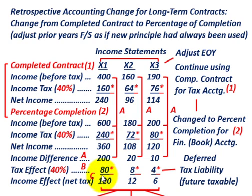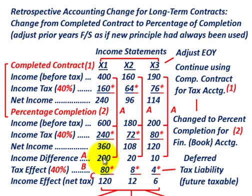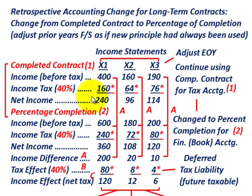The income effect net of tax equals the income difference less the tax effect for each year. These three figures — income difference, tax effect, and income effect net of tax — are what you must address in a retrospective accounting principle change. We're restating financial statements using cumulative amounts over the three years, so you sum the income differences across all years.